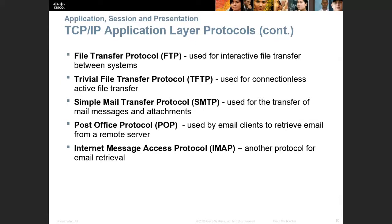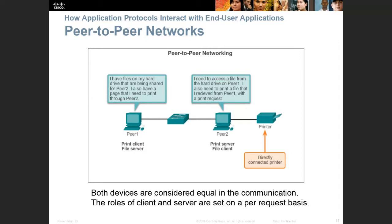SMTP uses port 25 to transmit mail when you click the send button. POP (Post Office Protocol) and IMAP are used to retrieve email. Most people no longer use these directly because they use web-based email clients like Gmail, Yahoo Mail, or Hotmail, which handle everything behind the scenes and send web pages. Peer-to-peer networking allows devices to share files and printers directly without a dedicated server — peer 2 has a printer plugged in via USB and peer 1 can print to it.